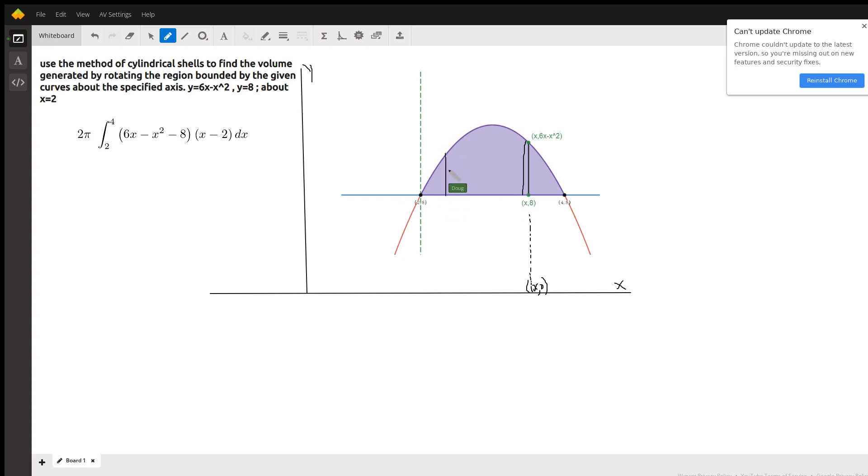And that means our typical shells will occur from 2 to 4 horizontally. You can figure out what those points are by substituting 8 for y in here and solving that equation.